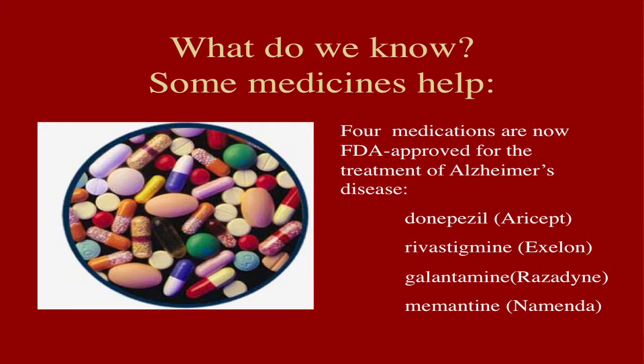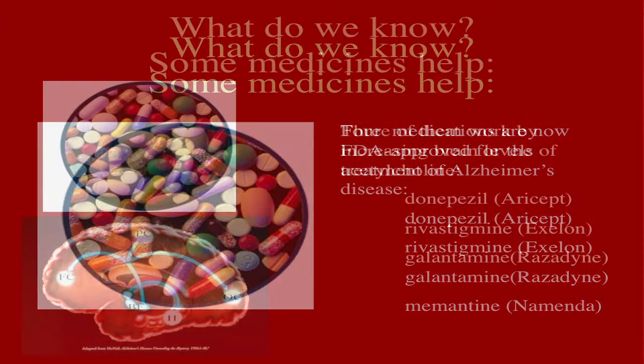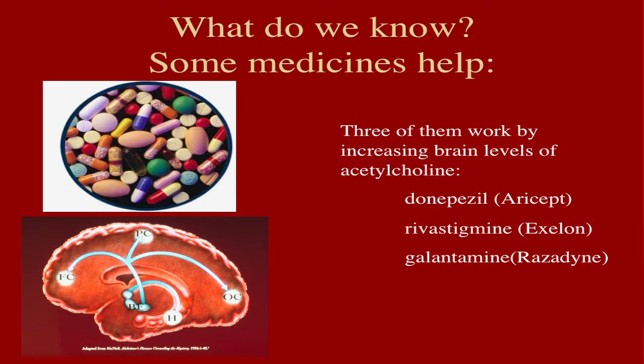Those treatment strategies have borne fruit in that there are four drugs that have been FDA approved for the treatment of Alzheimer's disease. The brand names are Aricept, Exelon, Razadyne, and Namenda, and the generic names are also listed. Three of those drugs actually work on the cholinergic system — the cells that make acetylcholine. They help the cells deliver more acetylcholine to the cortex.